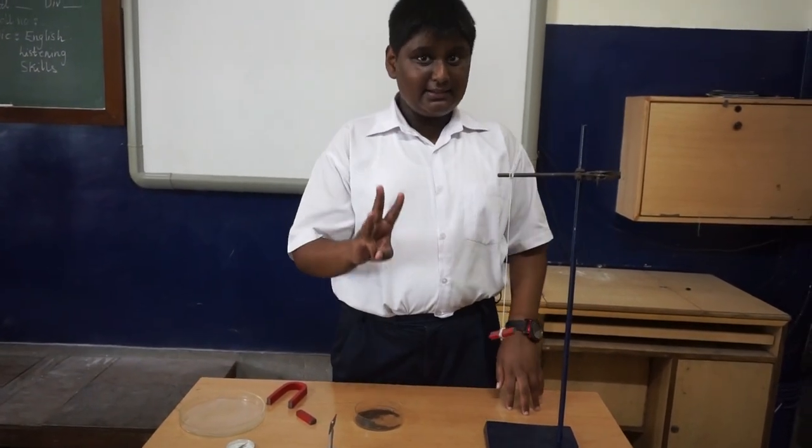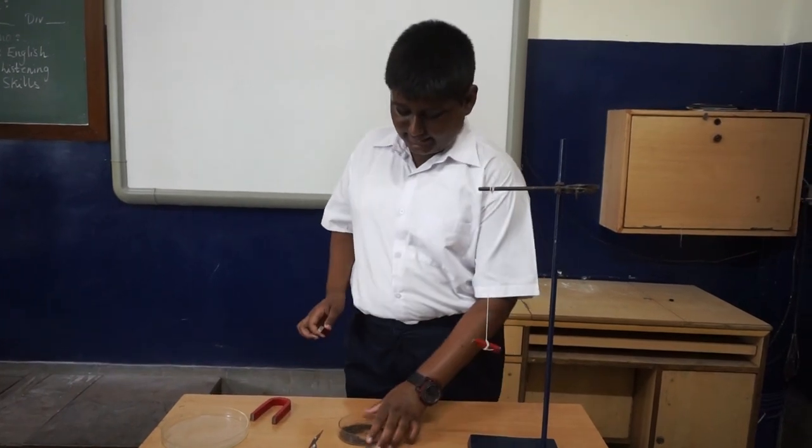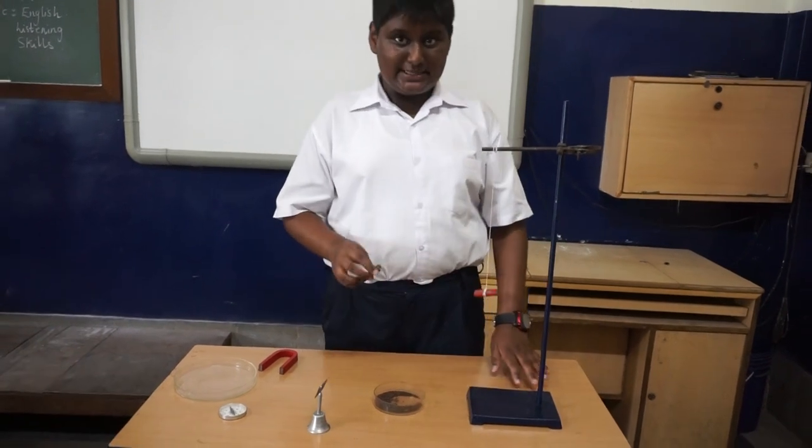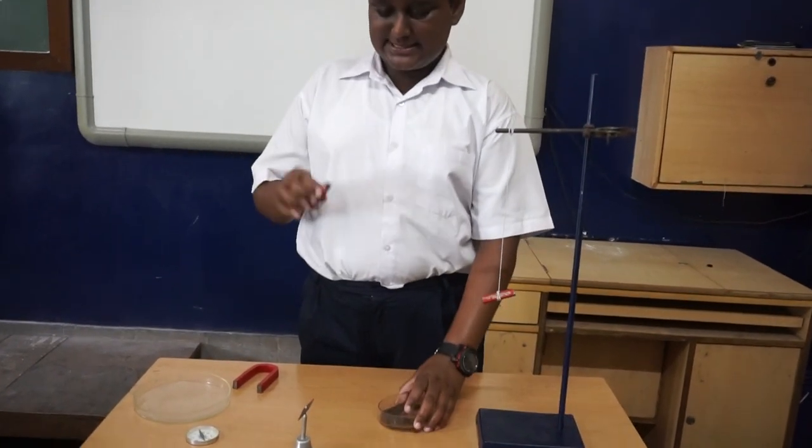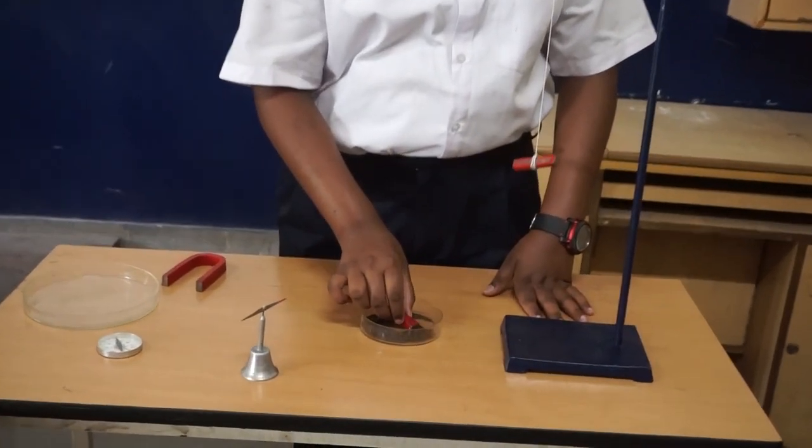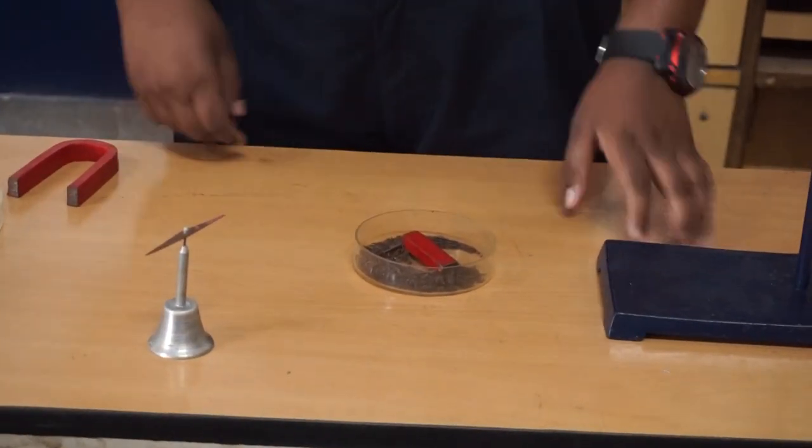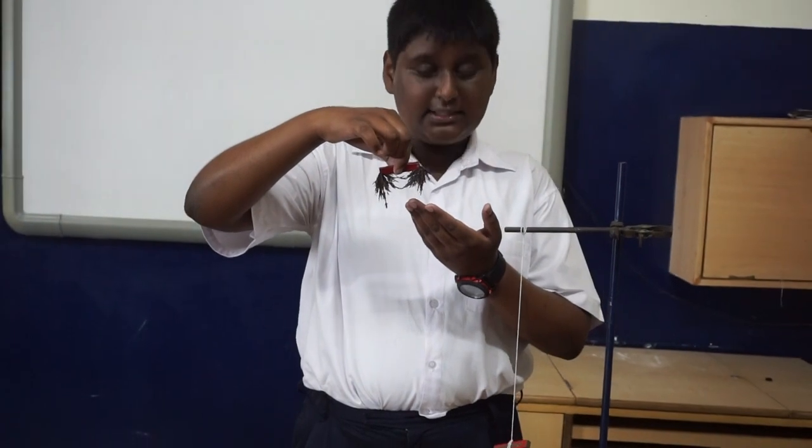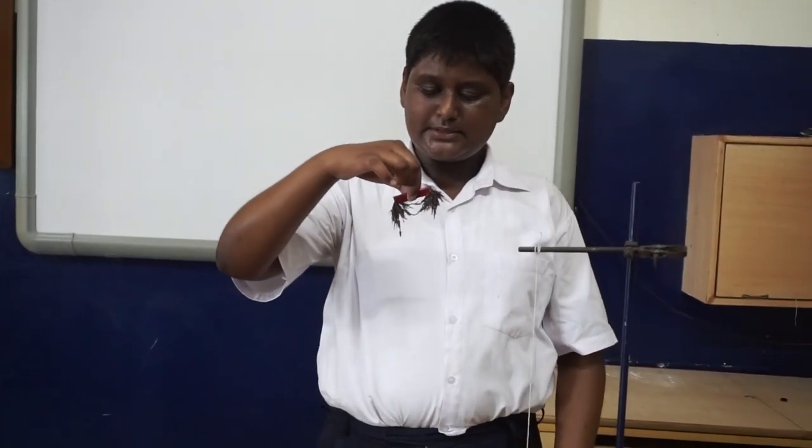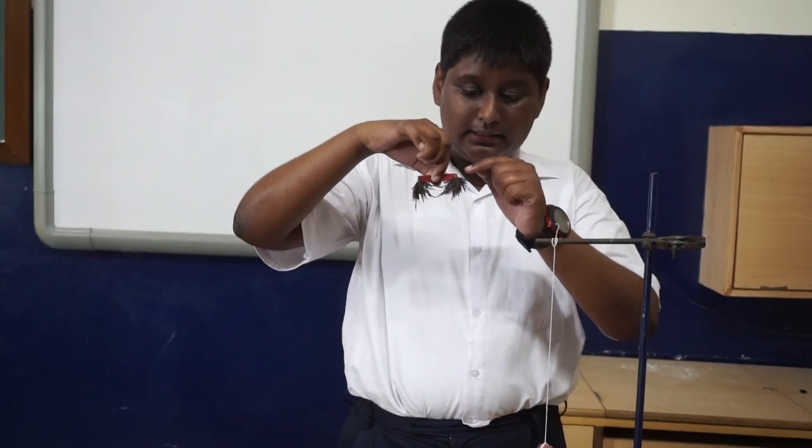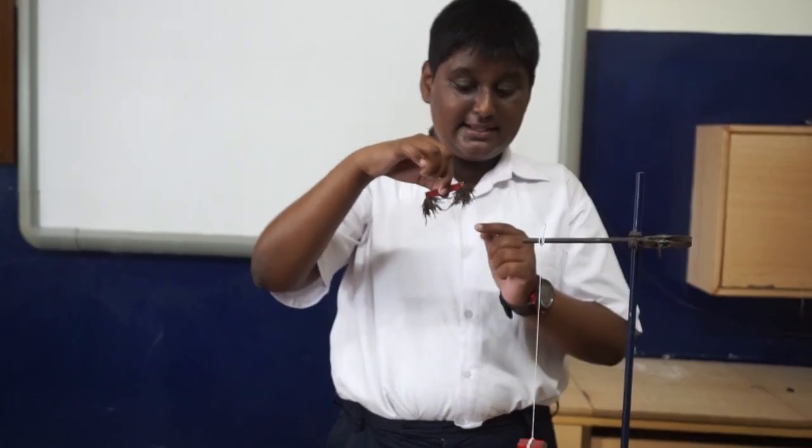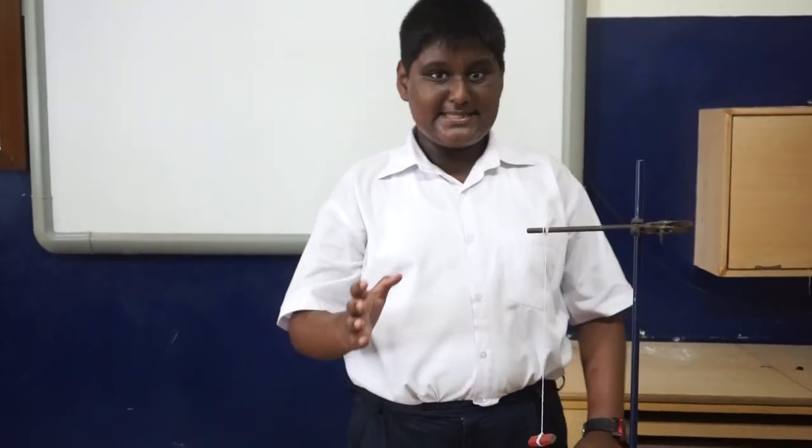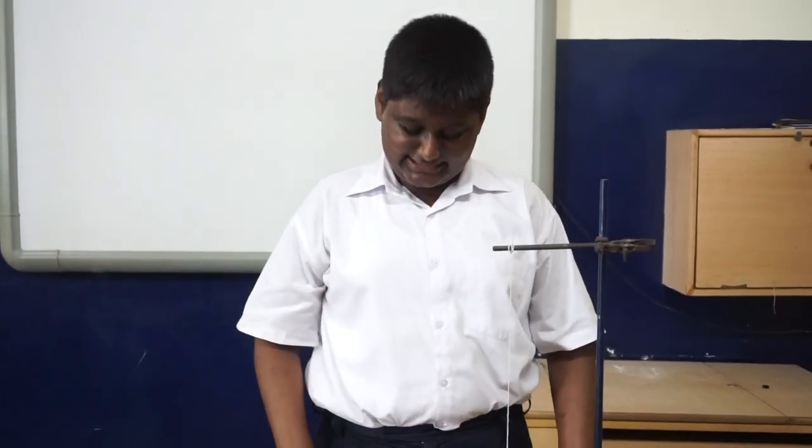Now, for the third demonstration, we need a bar magnet and some iron filings. What we need to do is, we need to place the magnet in this dish. We observe that the iron filings gets stuck to the magnet. Now, as you can see, the concentration of the iron filings is more at the poles as compared to the body. This is because the maximum power of a magnet is concentrated at its poles.